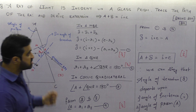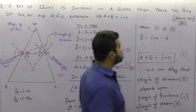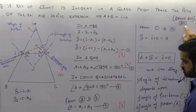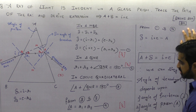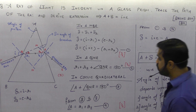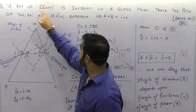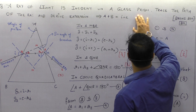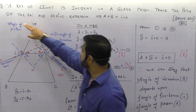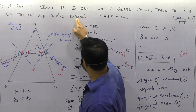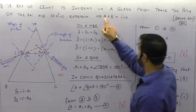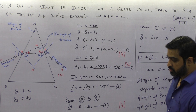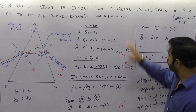This question was asked in Delhi CBSE 2011 for three marks. The question says: a ray of light is incident on a glass prism, trace the path of the ray and derive an expression for A plus delta equals i plus e.